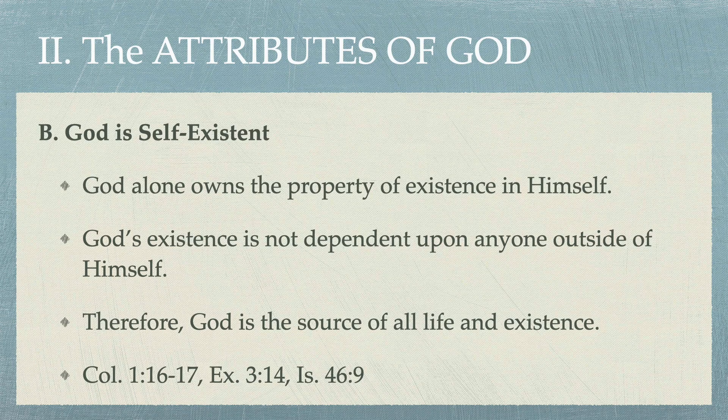The first attribute of God is that God is self-existent. God alone owns the property of existence in himself — nothing outside of God created God. He exists because he exists. God's existence is not dependent upon anyone outside of himself. Therefore, God is the source of all life and all things that exist; everything else exists because of God.